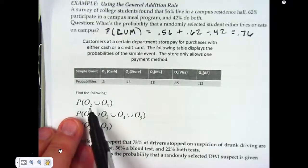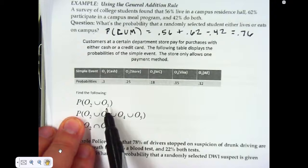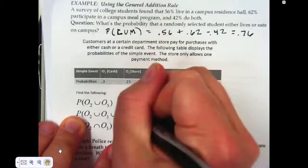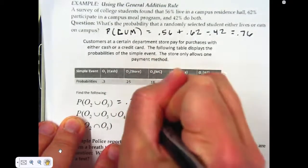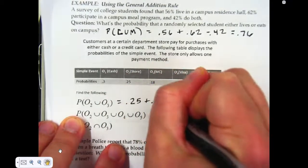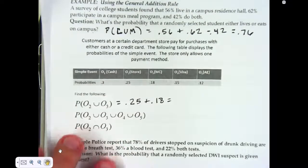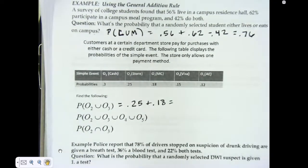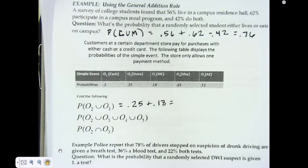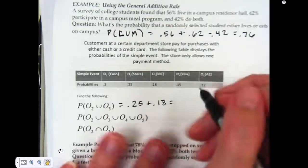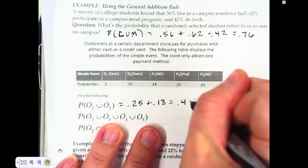For this one, they want the probability of a store credit card or a MasterCard. You're not going to pay with both. We're not going to count those situations where you split up a credit card. Let's just assume that doesn't happen. So I'm going to add those up, and I get 0.43.